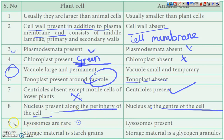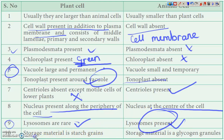Our ninth point is with respect to lysosomes. In plant cells, lysosomes are rare but still present, while in animal cells they are present. Regarding storage material, in plant cells the storage material is starch grains, whereas in animal cells it is glycogen granules.